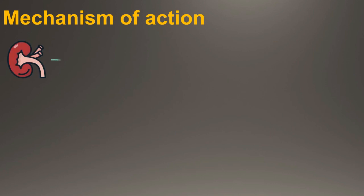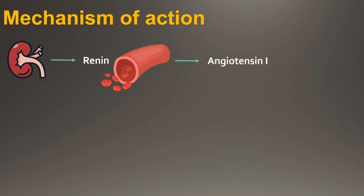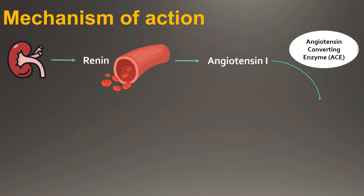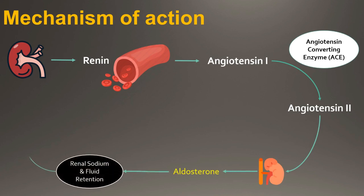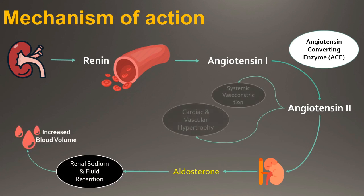Renin, an enzyme synthesized by the kidneys, is released into circulation where it acts on the plasma globulin substrate to produce angiotensin-1. Angiotensin-1 is then converted by angiotensin-converting enzyme (ACE) to angiotensin-2, a potent endogenous vasoconstrictor substance. Angiotensin-2 also stimulates aldosterone secretion from the adrenal cortex, thereby contributing to sodium and fluid retention.